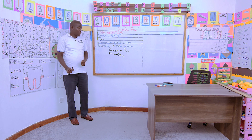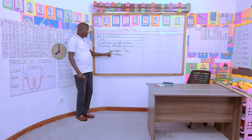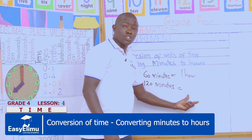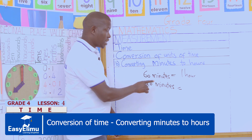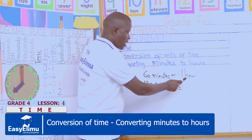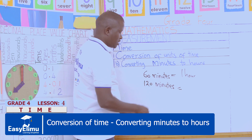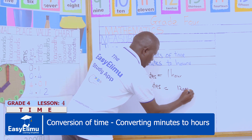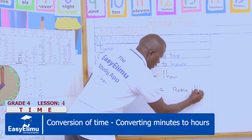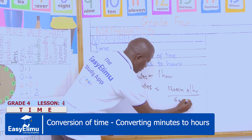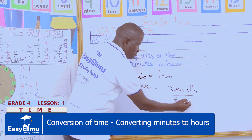This is our formula. If 60 minutes are equivalent to one hour, then 120 minutes will be equivalent to what? We cross multiply: 120 multiplied by 1 hour, divided by 60 minutes.